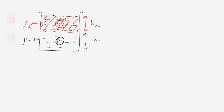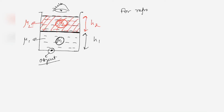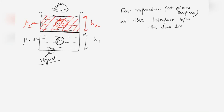Suppose an object is placed at the bottom of the container. We have to find the apparent depth of this object. Refraction of light occurs at the interface between the two liquids and also at the top surface, where the eye is located. For refraction at a plane surface, the formula is: apparent depth divided by real depth equals μ2 divided by μ1.